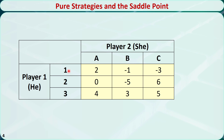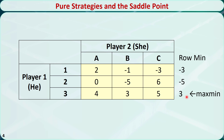Now let's find the optimal strategy for each player. For player 1, if he chooses strategy 1, then player 2 will choose strategy C, so player 1 will lose $3. Negative 3 is the smallest number in row 1. Similarly, if player 1 chooses strategy 2, then player 2 will choose strategy B, so player 1 will win only $3 instead of $4 or $5. 3 is the smallest number in row 3. Out of these three possible outcomes, player 1 should choose the strategy with the largest row minimum value, which is 3 — the maximum of the row minimums. Therefore, the best strategy for player 1 is strategy 3. By choosing strategy 3, player 1 can ensure that he will win at least $3.